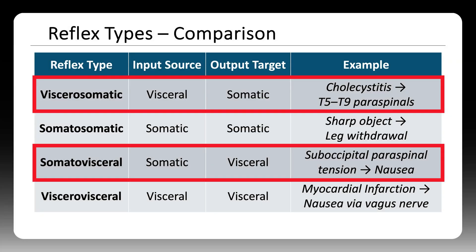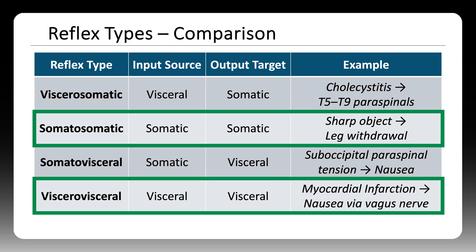Let's briefly review and compare the four reflex types. Viscerosomatic and somatovisceral reflexes represent crosstalk between viscera (internal organs) and soma (musculoskeletal system). Somatosomatic and viscerovisceral reflexes remain within their respective domains. All are relevant to an osteopathic approach to patient assessment.